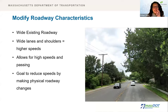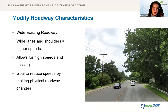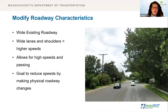Many of the safety issues along this corridor can be attributed to the wide pavement width. The wide lanes and shoulders lend themselves to higher speeds and passing. A roadway like this gives drivers more comfort for speeding as they have a wide width and space to make passing maneuvers. Physical roadway changes need to occur, such as narrowing the usable roadway width and implementing traffic calming measures.